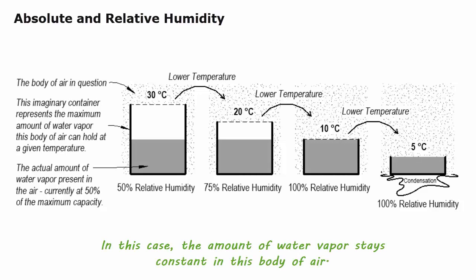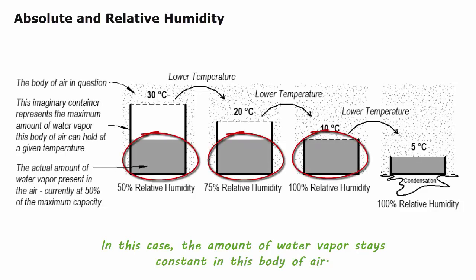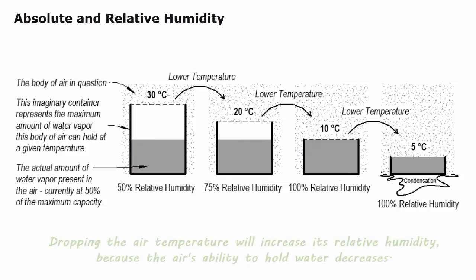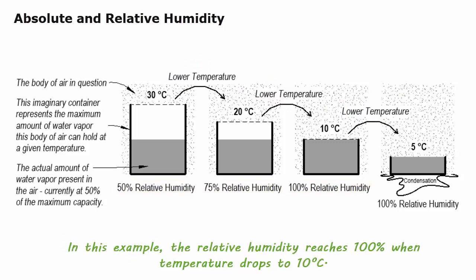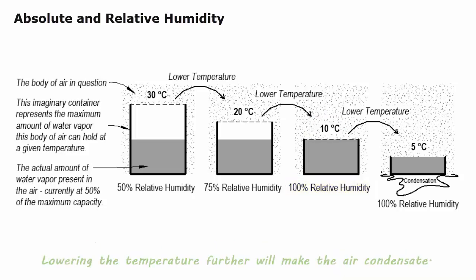In this case, the amount of water vapor stays constant in this body of air. Dropping the air temperature will increase its relative humidity because the air's ability to hold water decreases. In this example, the relative humidity reaches 100% when the temperature drops to 10 degrees C. Lowering the temperature further will make the air condensate.